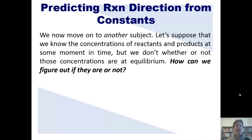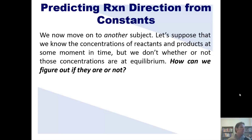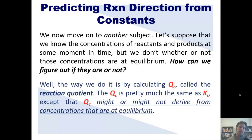I want you to imagine that we have an equilibrium reaction. Now with that reaction, let's suppose that we do know the concentration of the reactants and the product at some moment in time, but we have no idea whether or not those concentrations are at equilibrium. How can we figure out if this particular reaction at this moment in time is at equilibrium? Well, the way we do this is by calculating QC, which is called the reaction quotient.